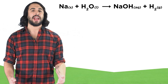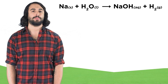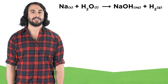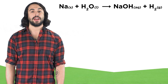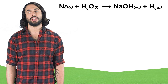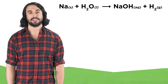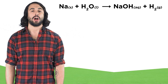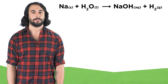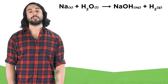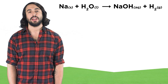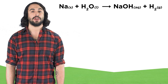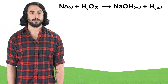Take this reaction for example. We have Na solid plus H₂O on the reactant side, and then NaOH in the aqueous phase, and H₂ in the gas phase on the product side. Let's turn this equation into a sentence comprised of normal words.